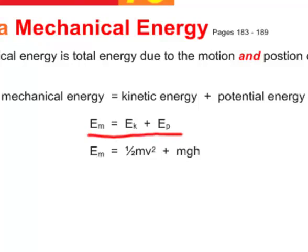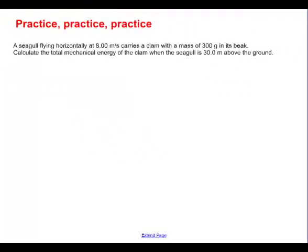If you break down kinetic energy and potential energy, then mechanical energy is equal to kinetic energy, which is one-half MV squared, and potential energy, which is mass times gravity times height. Well, once again, let's do some of these and see how this works.